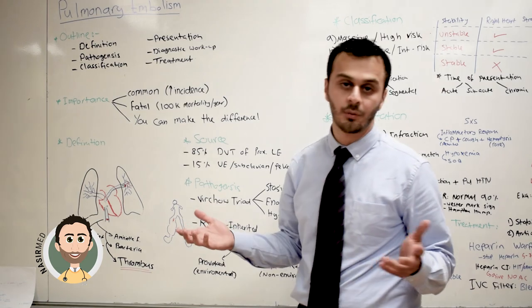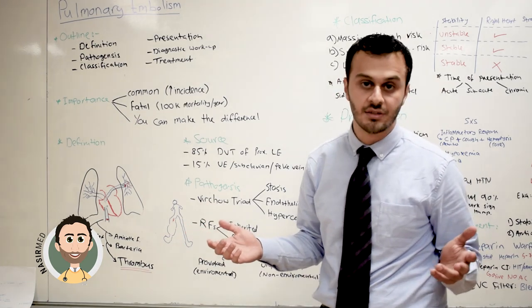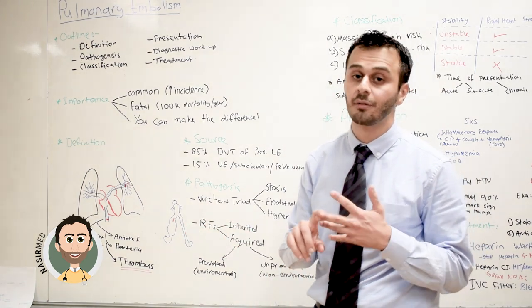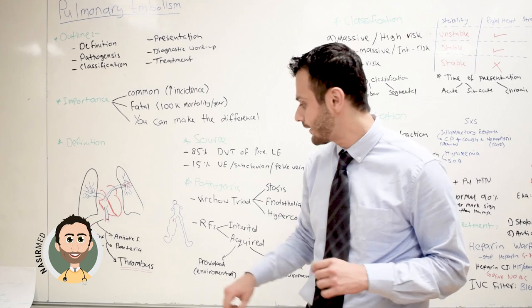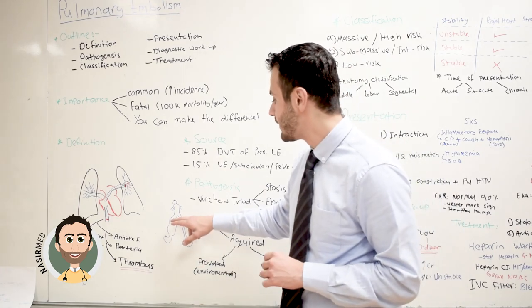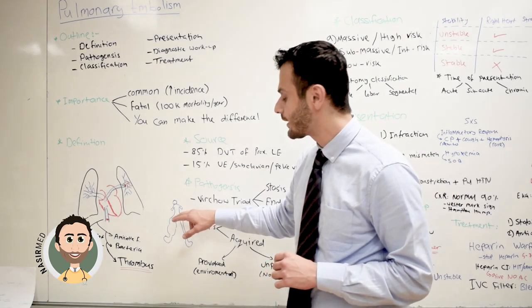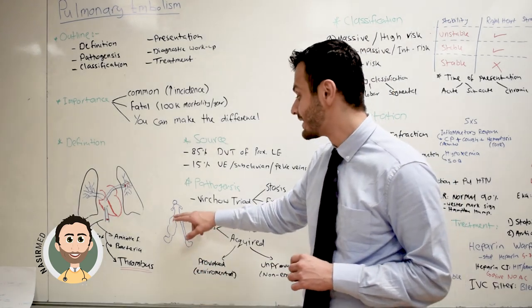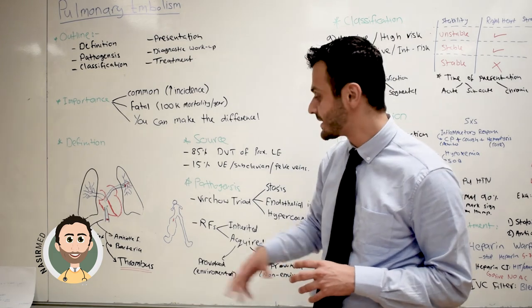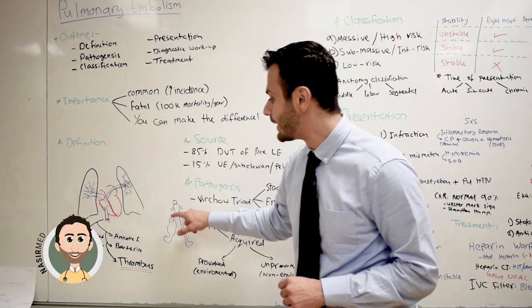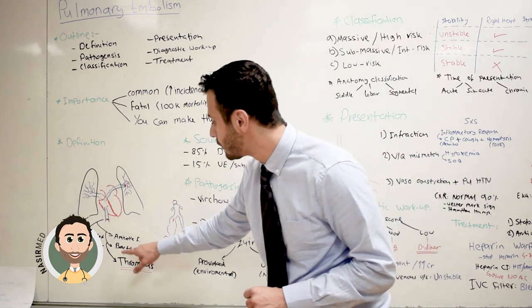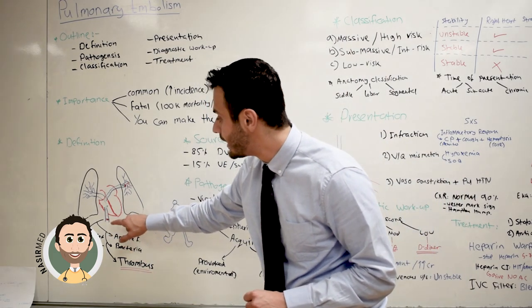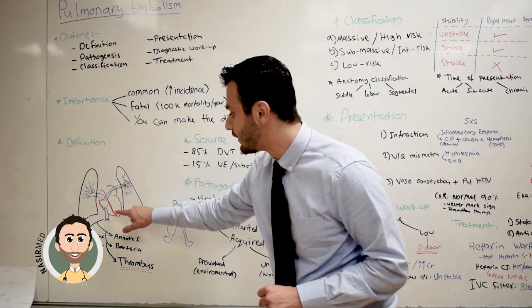Normally the symptoms of DVT include edema, swelling, and redness of the leg. This blood clot can eventually dislodge or break off from its place and travel through the inferior vena cava into the right ventricle.